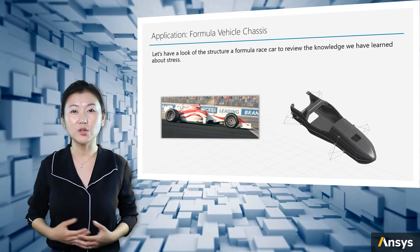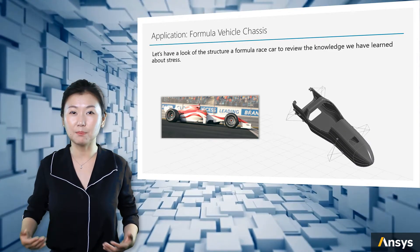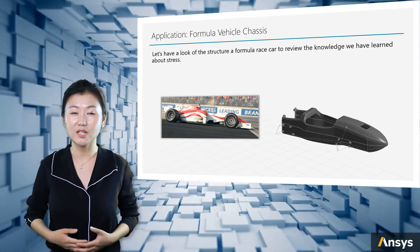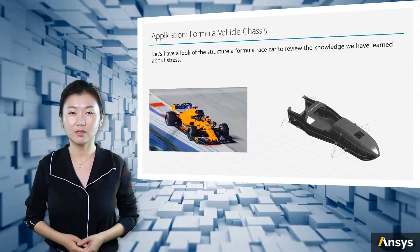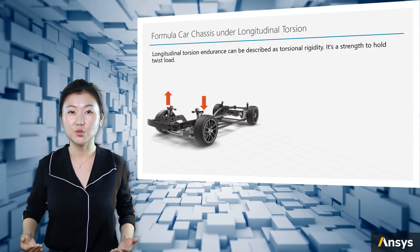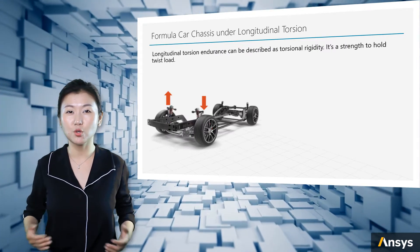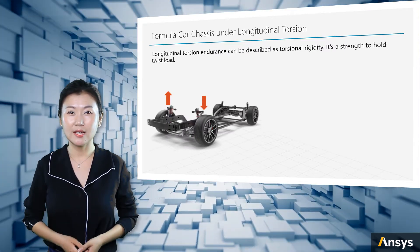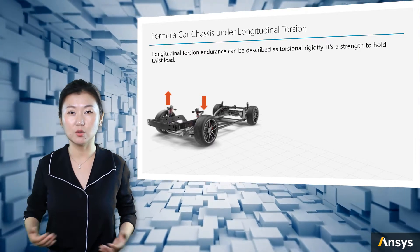Here, a model is built for the chassis to analyze the performance of it under longitudinal torsion. Longitudinal torsion endurance can be described as torsional rigidity — it's a strength to hold twist load.